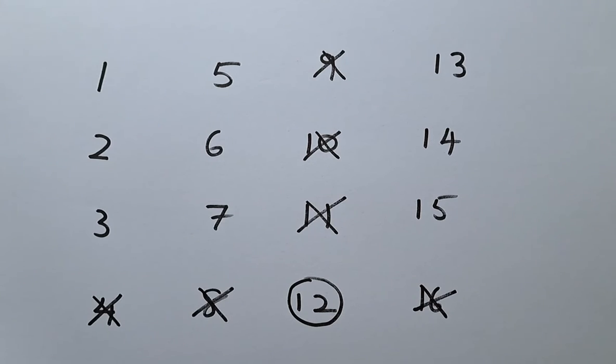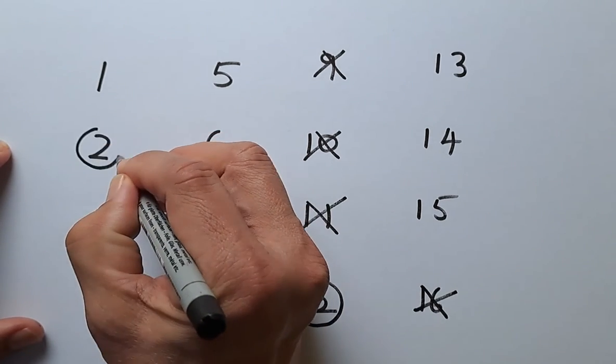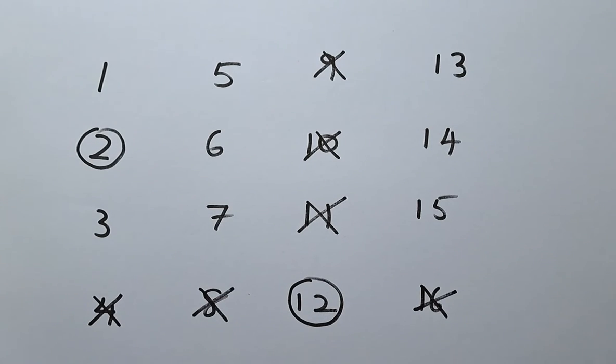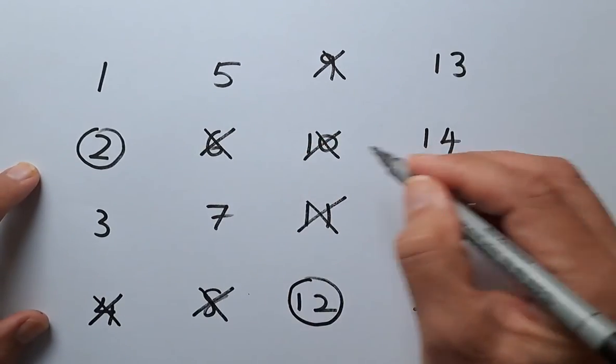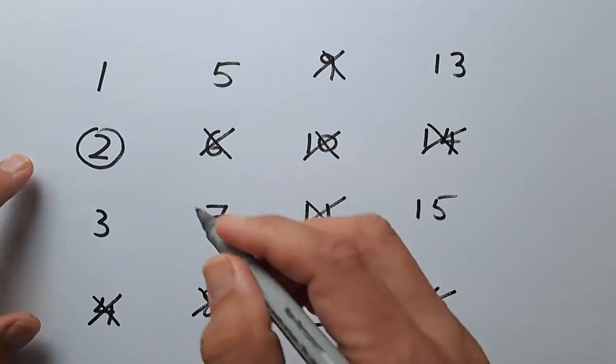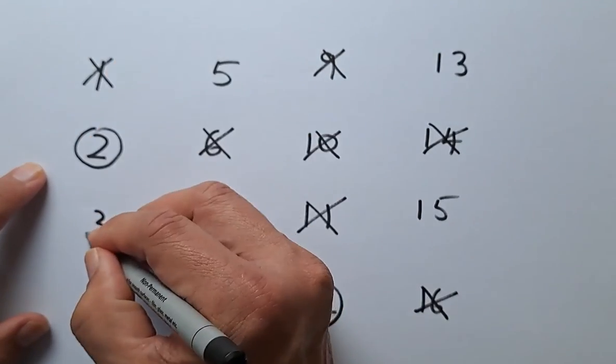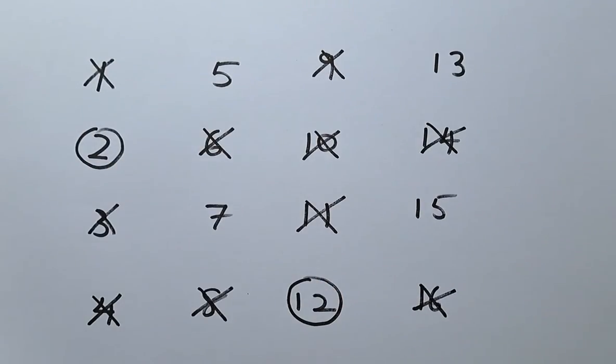Now we have to choose the second number. Choose any number, suppose we decide to choose number 2. So if we choose number 2, then the third number cannot be anyone on the same row. So 6 and 14 is deleted and 1 and 3 in the same column of 2 is also deleted.